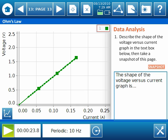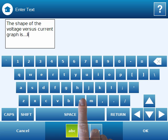Following data collection is a set of analysis questions designed to have students focus on the data being collected, like this short answer question. Let's go ahead and answer, then add our answer to the journal. The shape of the voltage versus current graph is linear.